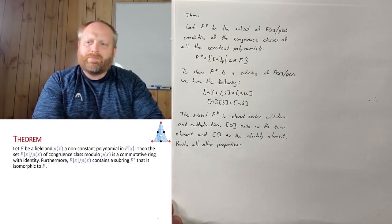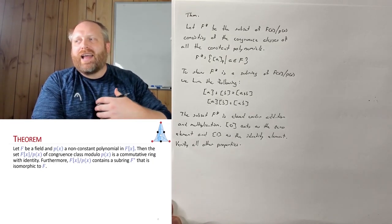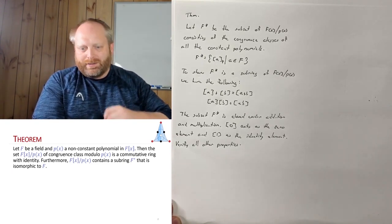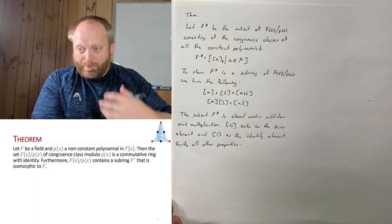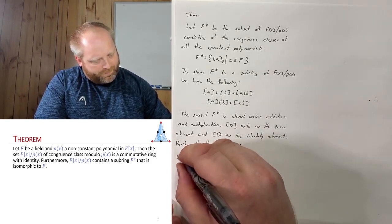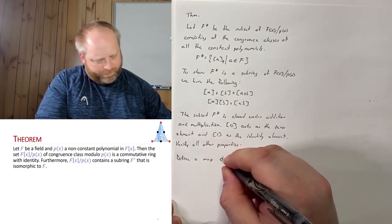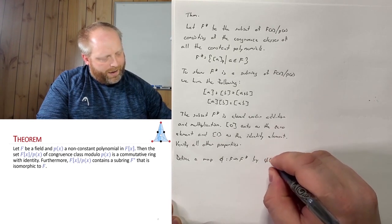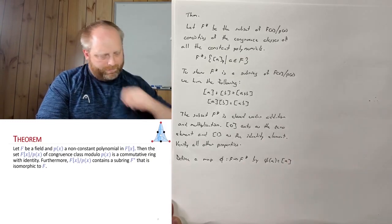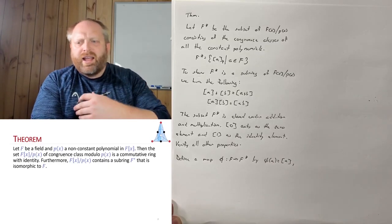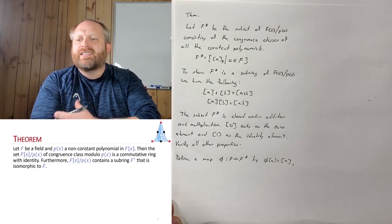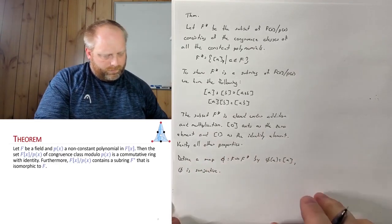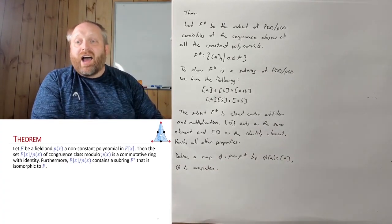We have it being a commutative ring with identity. Now we want to show that f adjoint x mod p contains a sub-ring f* that is isomorphic to f. We need a mapping, so we define the map φ from f to f* by φ(a) = [a] mod p. It is trivial to show — and I'll leave it as an exercise — that this is a surjective mapping.